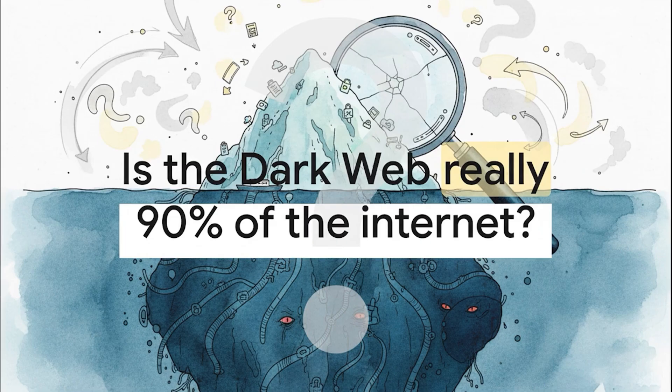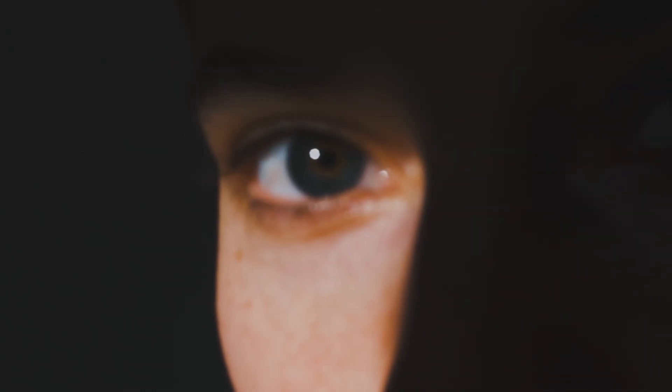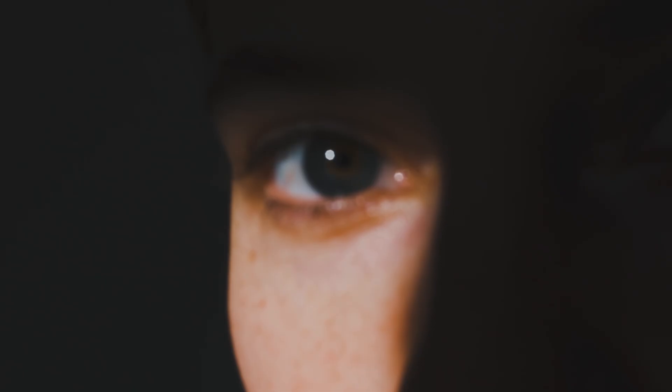Let's kick things off with the biggest myth of them all. You've probably seen that image — the iceberg — where the tiny tip is the normal internet and this huge, terrifying mass underneath is the dark web, making up like 90% of everything. Is that true? Nope, not even close. It's actually a classic case of mistaken identity.